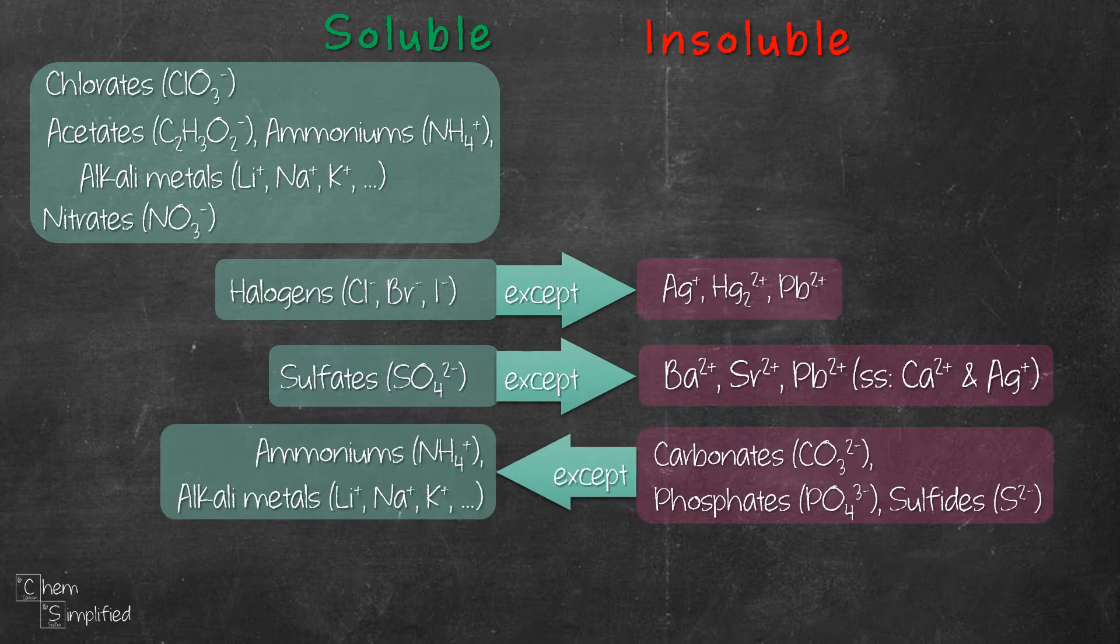Moving on to the carbonates, phosphates, and sulfides. Any substances with these anions are insoluble, except for when they are paired with ammonium and group 1A metals. Let's take SrCO3, for example. It's a carbonate with Sr, strontium metal. Since it's not part of the exceptions, that means SrCO3 is insoluble.